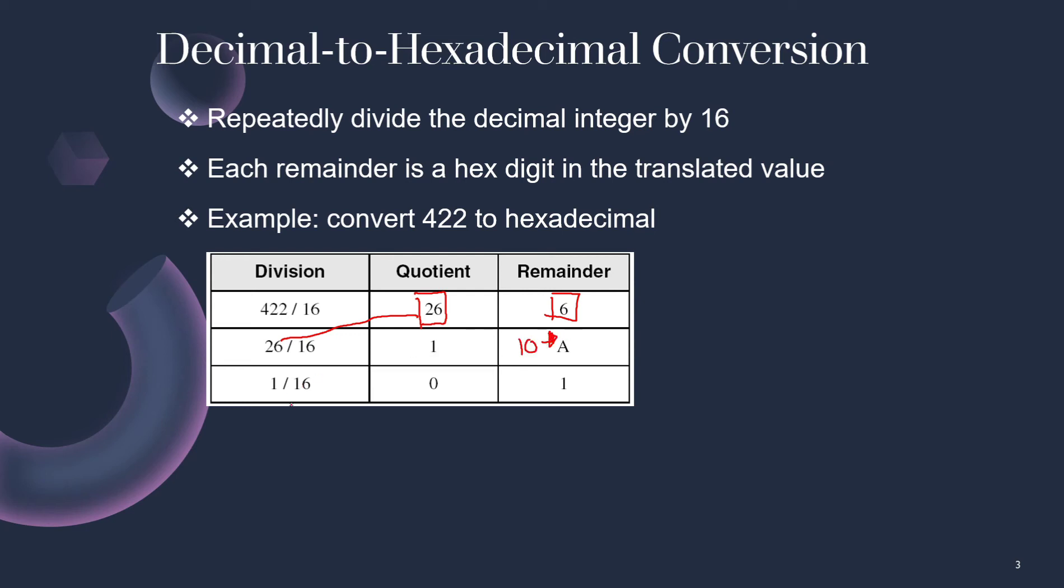We take this one, divide it by 16. 16 doesn't go into 1, not even once. Quotient is 0, the remainder is 1 because this is the value that we have. And we read it upwards. And that's how you get the 1A6.